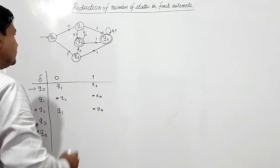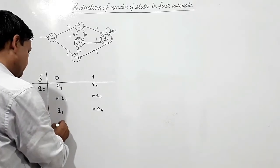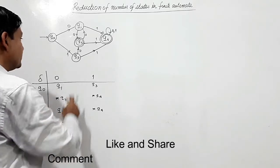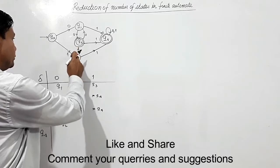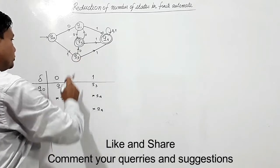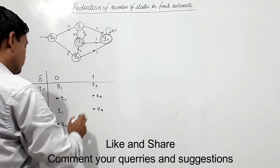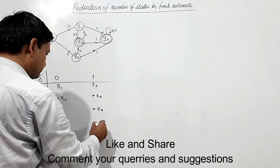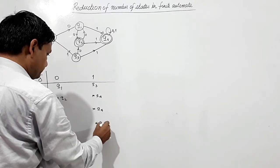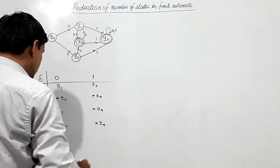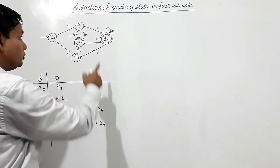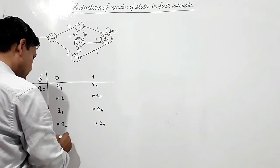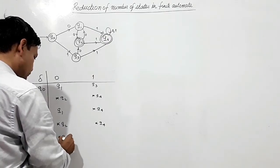Q3 on 0 is going to Q2 and Q3 on 1 is going to Q4. Q4 on 0 and 1 is going to Q4.